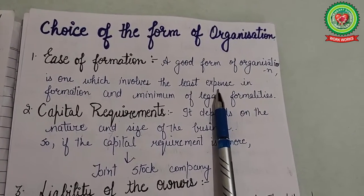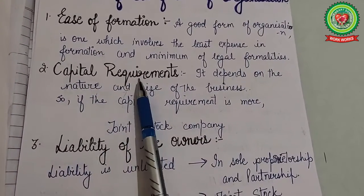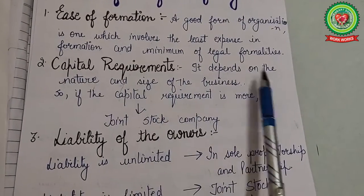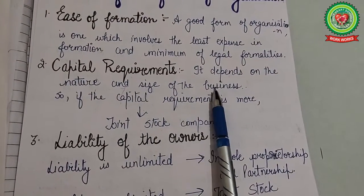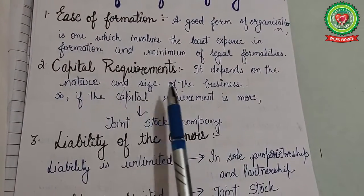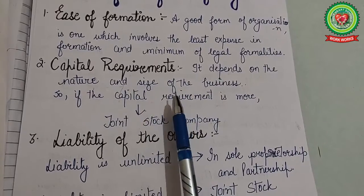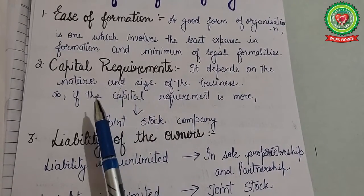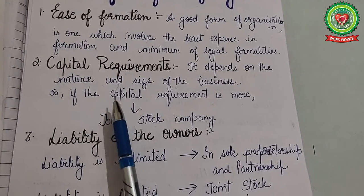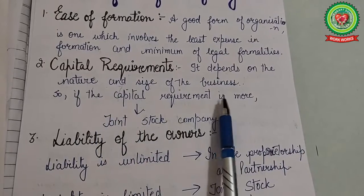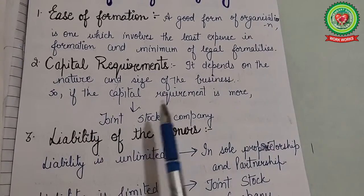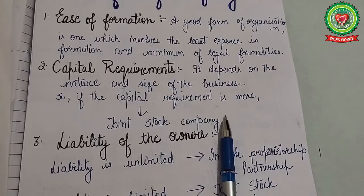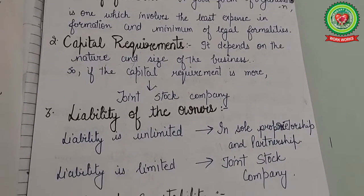The next factor is capital requirements. Capital requirements depend upon the nature and size of the business. If a smaller amount of capital is required, then sole tradership and partnership are the best choice. But if capital requirements are large, then a joint stock company is the best form of business organization.